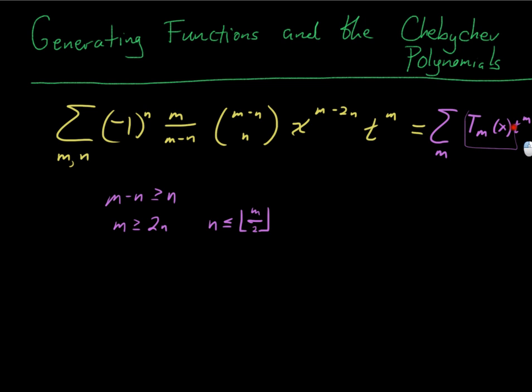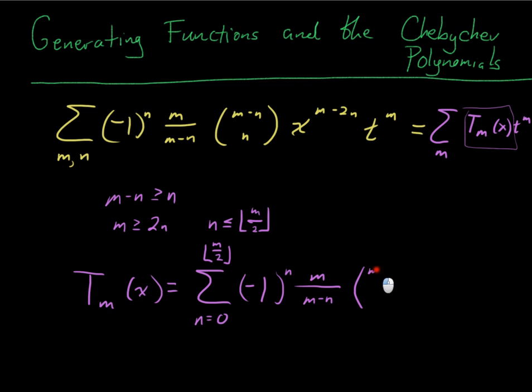So if I just want that one guy, I just take one value of m, I get T_m(x). So it's going to be sum from n equals 0 to the floor of m over 2, (-1) to the n, m over (m minus n), (m minus n) choose n, x to the (m minus 2n).